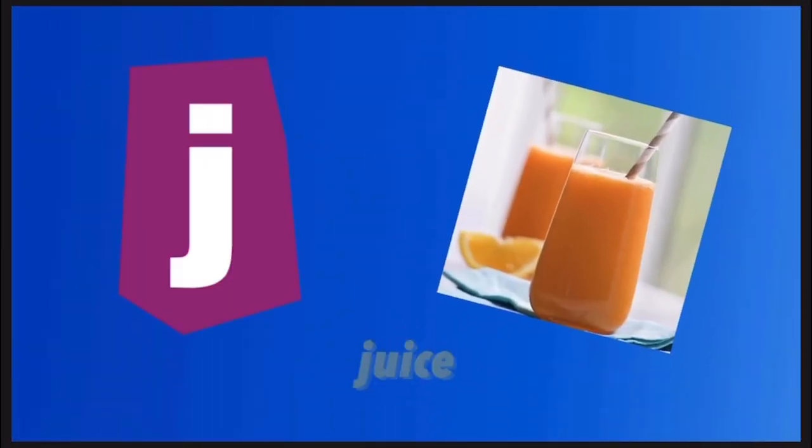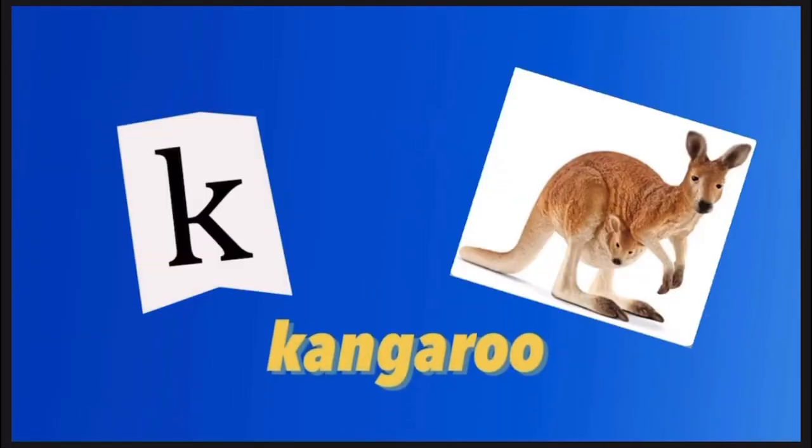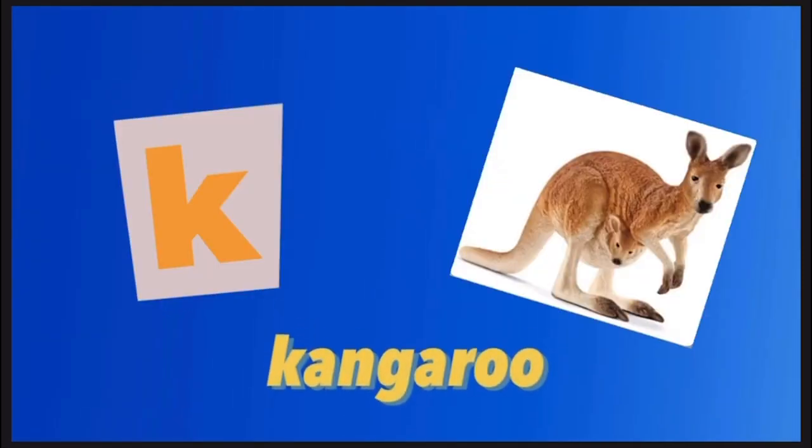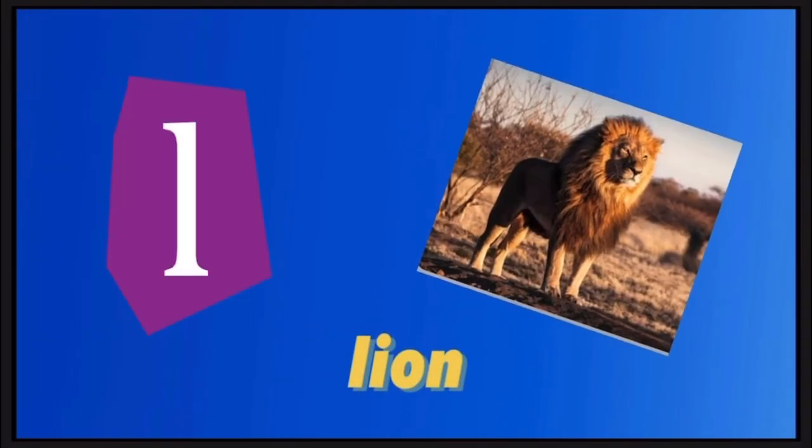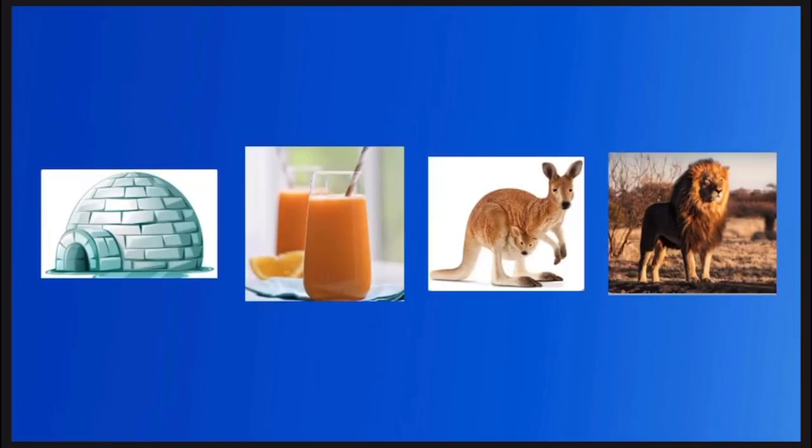I is for Igloo. I, I. Igloo. J is for Juice. J, J. Juice. K is for Kangaroo. K, K. Kangaroo. L is for Lion. L, L, L. Lion.